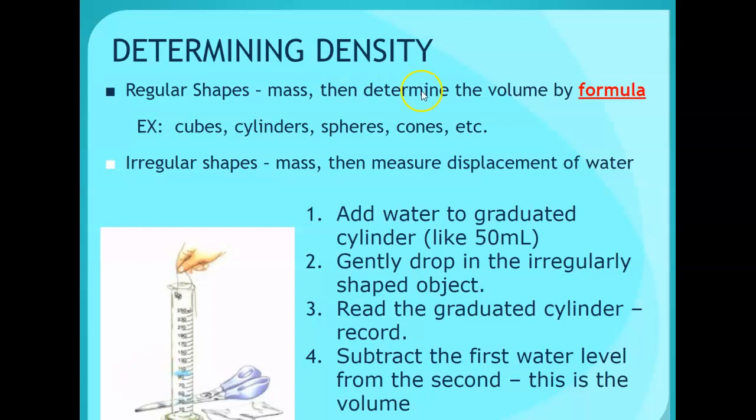Regular shapes - mass, then determine the volume by formula, like length times width times height. And then irregular shapes - mass, then measure displacement of water. So add the water to the graduated cylinder like 50 milliliters. Gently drop it in so it doesn't splash. Then read the graduated cylinder, and so how much it raised up. Subtract the first water level from the second. And this is the volume.